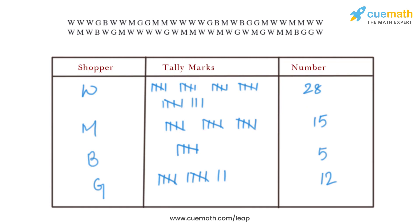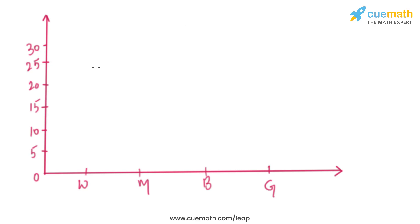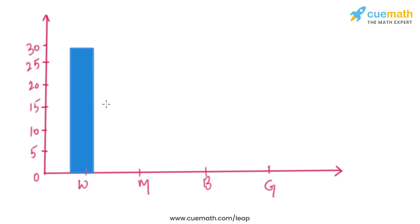The number of women is 28, which is just under 30, so we draw the bar between the 25 and 30 marks. For the number of men — 15 — we can see 15 on the y-axis and draw the bar there.